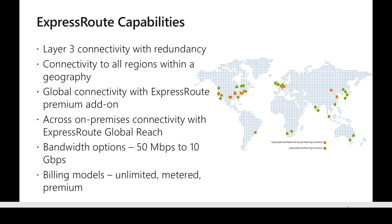There are different bandwidth options available with ExpressRoute. Customers can start small, from 50 Mbps up to 10 Gbps, and pricing varies based on the capacity chosen. There are three different pricing models: the first is the unlimited model, where the customer is charged a flat fee based on the bandwidth tier selected. This is ideal for scenarios where the customer has a large amount of data to transfer, as they get a fixed bandwidth and pay for it, which is economical in the long term.